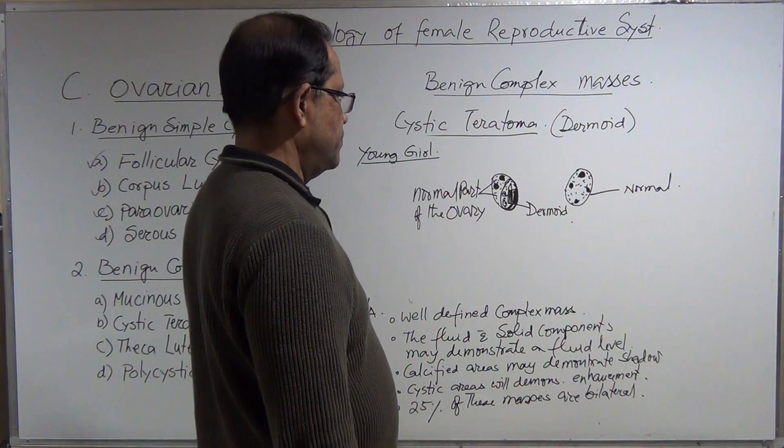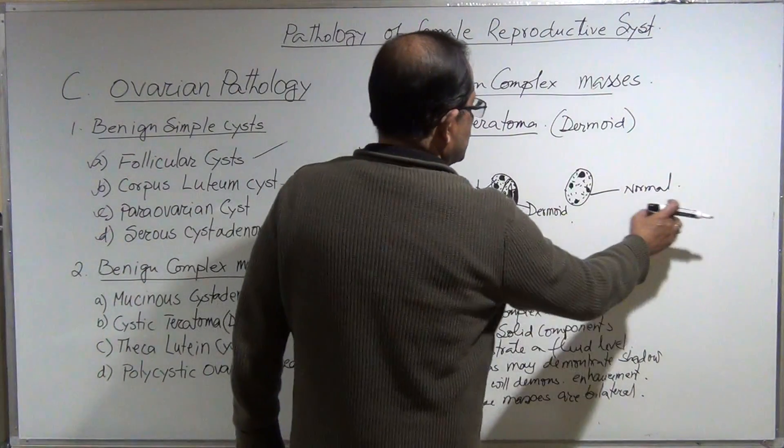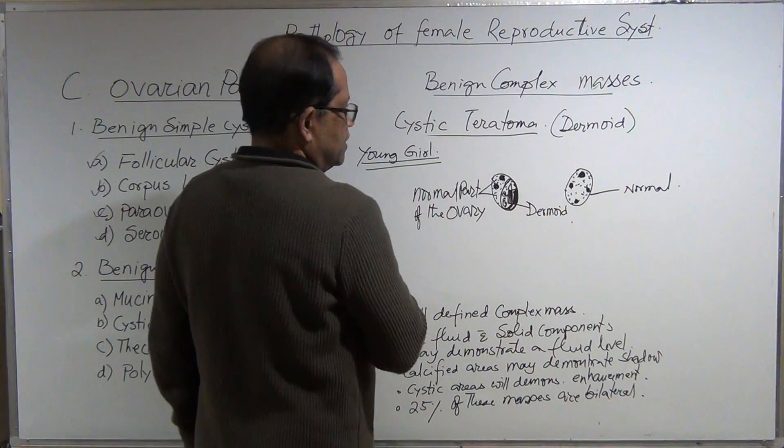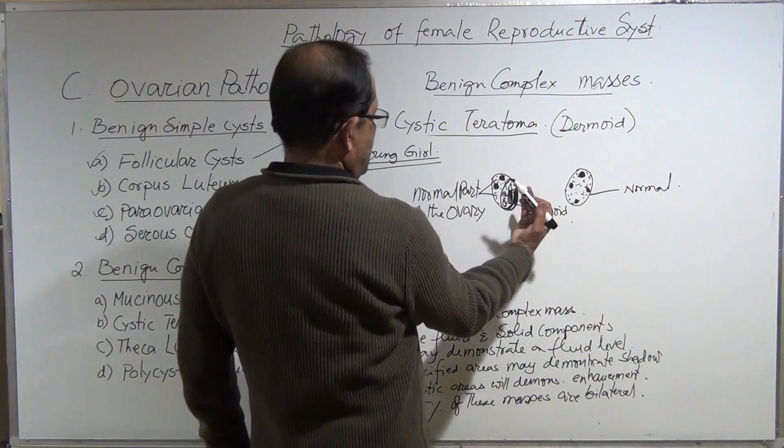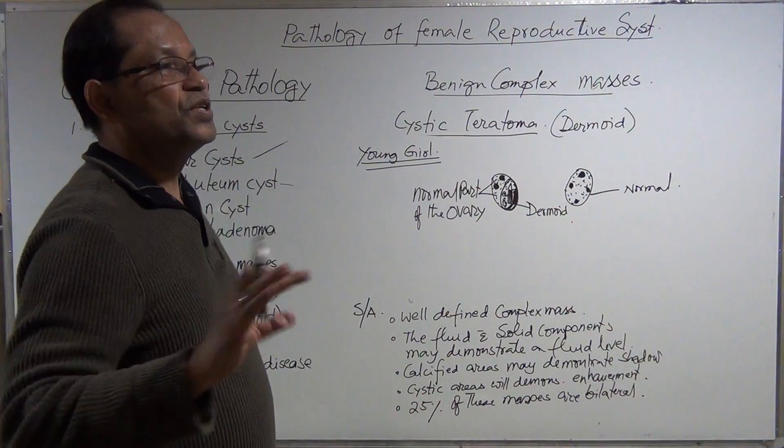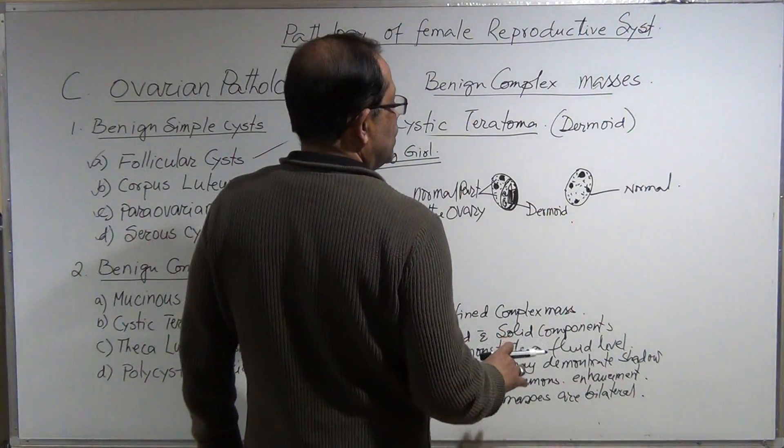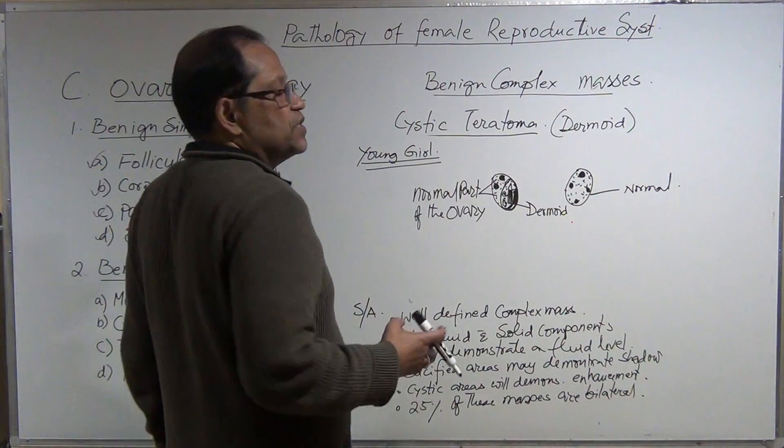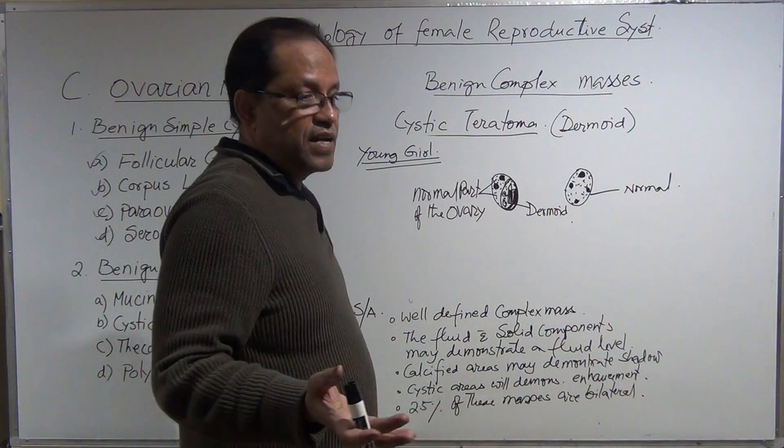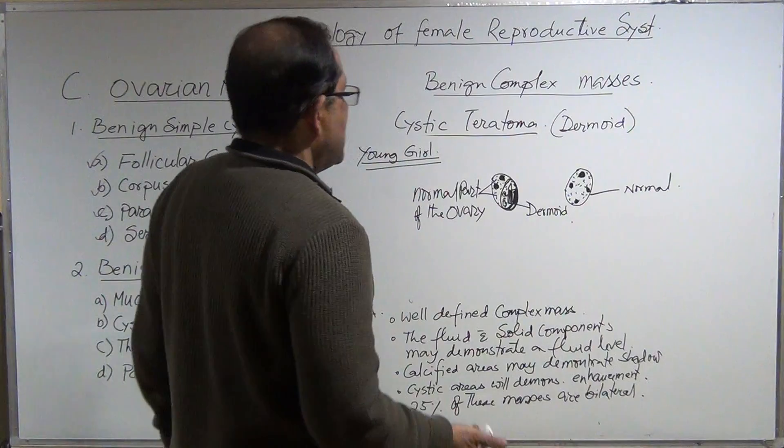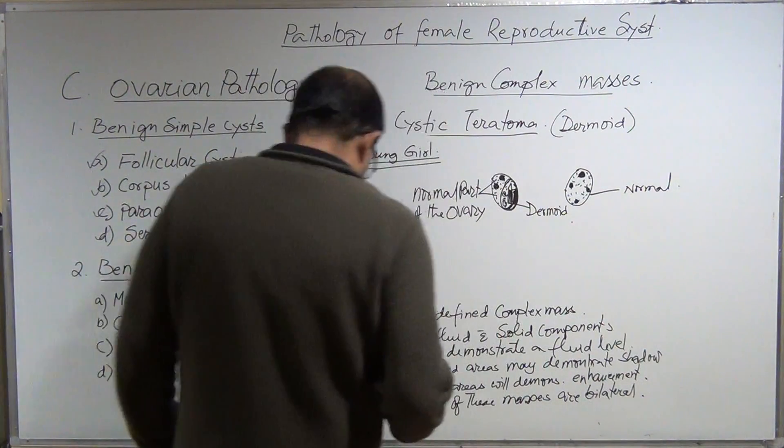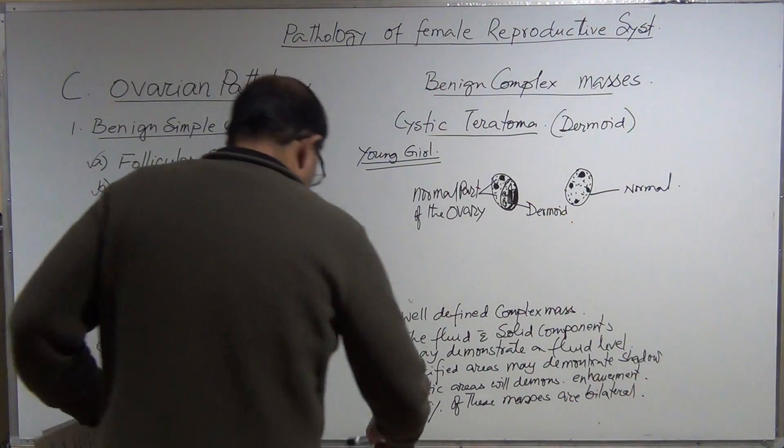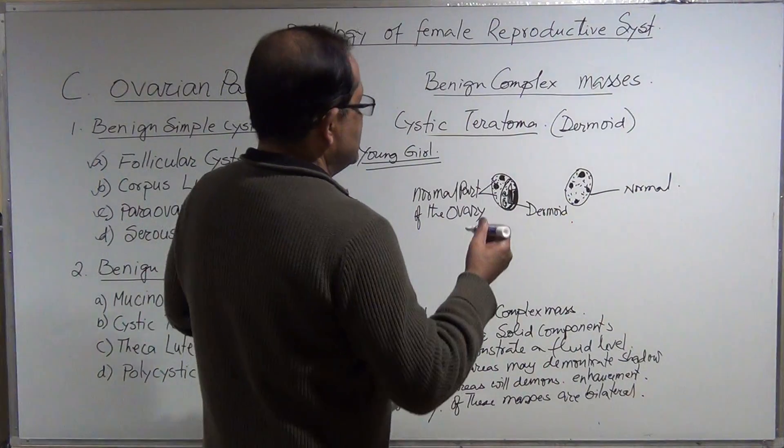Now this ovary is doing normal. Do you think the surgeon will take off this whole ovary? No, no, no. You never know—one day this ovary can be damaged, and if you take this off, this girl will be infertile for her whole life.